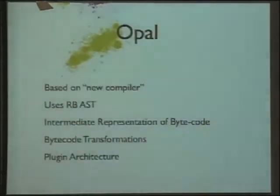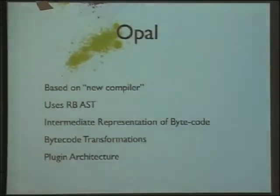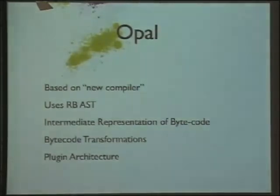Another thing we are working actively on is infrastructure in support of research. Over the last years we did lots of language experiments, and for language experiments you always need to change the compiler in some way. Or you might be interested in behavioral reflection, which depending on how you do it may imply bytecode manipulation. We did a lot of experiments in that direction as pure research, and what crystallized out is that we need a certain kind of compiler framework to support these kinds of experiments easily.